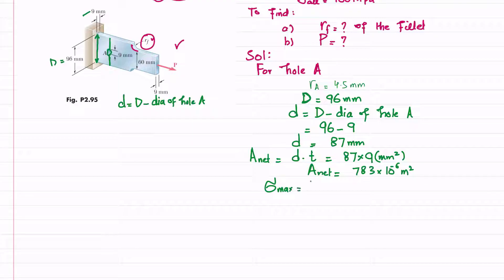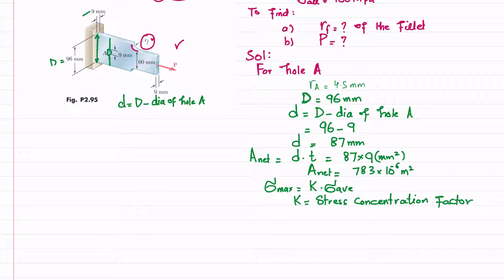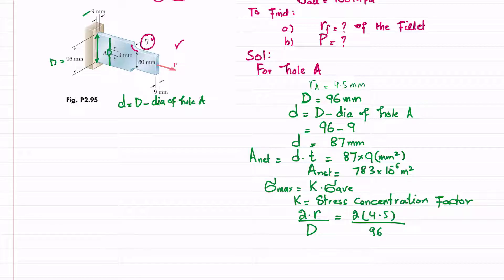The maximum stress equals K times the average stress, where K is the stress concentration factor. To find K we calculate 2r divided by D: 2 times 4.5 divided by 96, which equals 0.09375.